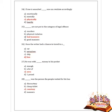Next question: if one is assaulted in what manner can one retaliate accordingly? Given options are emotionally, mentally, physically, and hurtly. Option C is correct — physically. If one is assaulted physically, one can retaliate accordingly. Next question: what is not put in the category of legal offense? Options are murder, physical violations, bad manners, good manners. Option C is correct — bad manners are not in the category of legal offense.